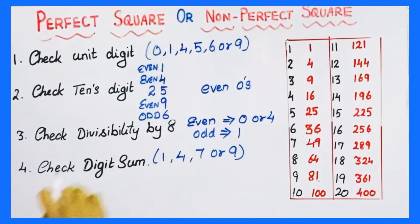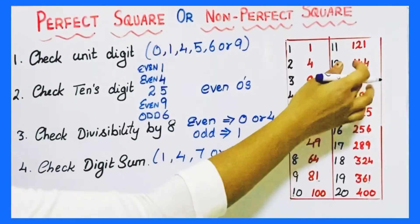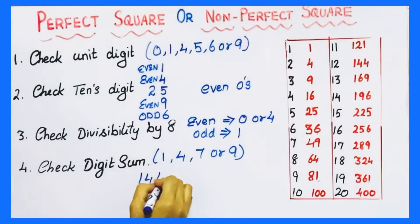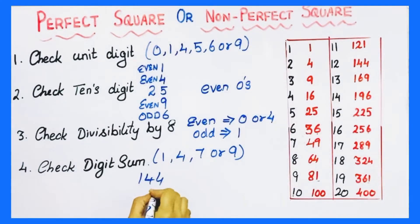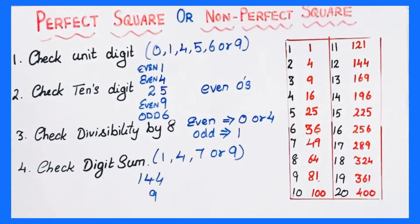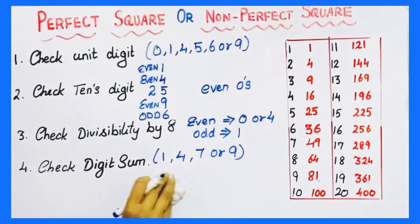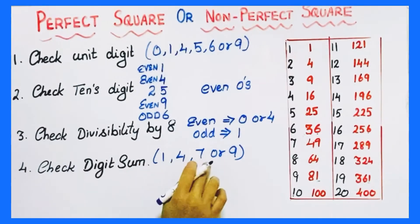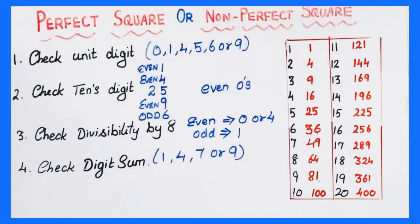Let's take another perfect square number — 144. So 1 plus 4 plus 4 equals 9. The perfect square number always has a digit sum of 1, 4, 7, or 9.